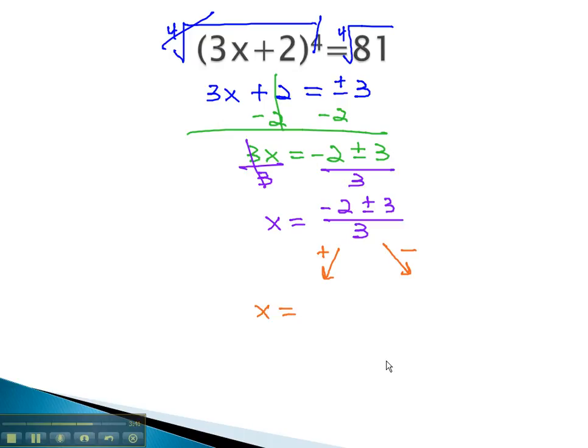When we do the plus, we find x equals negative 2 plus 3 is 1 over 3, or doing the minus, negative 2 minus 3 is negative 5 over 3. And we have our two solutions.